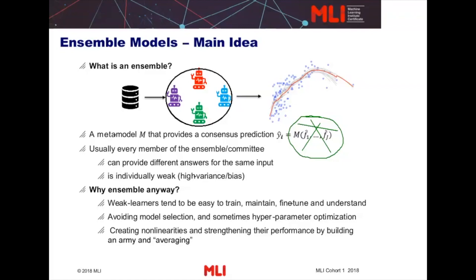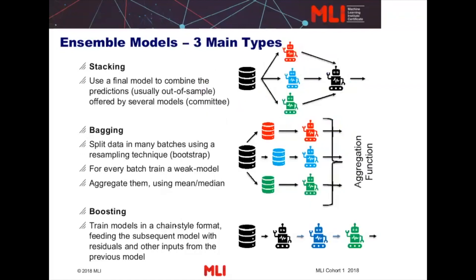There are three main types of ensemble models. The first one is stacking. Most of you from an econometrics or financial background may have heard of it as forecasting combination, model combination, or model averaging. What you do is you have several models trained on the same data source, and you create a meta-model — a bigger model that combines the outputs of each individual model into a final one.